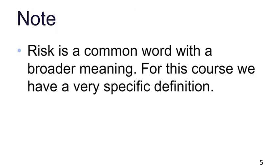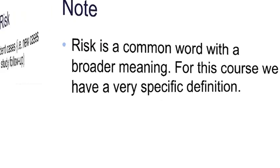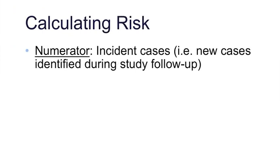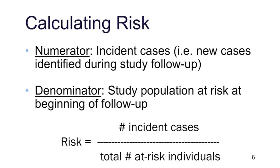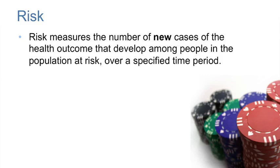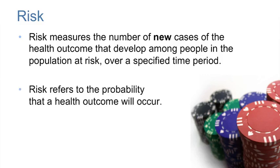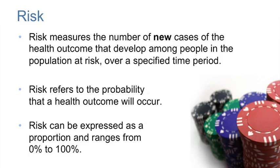Risk is a common word with a broader meaning, but for this course we will have a very specific definition. The numerator for a risk is incident or new cases — these are new cases identified during the study follow-up. The denominator is the study population at risk of getting the disease or health outcome at the beginning of follow-up. Risk is the number of new or incident cases divided by the total number of at-risk individuals. It measures new cases that develop among the population at risk over a specified time period, refers to the probability that a health outcome will occur, and can be expressed as a proportion ranging from 0 to 100%.